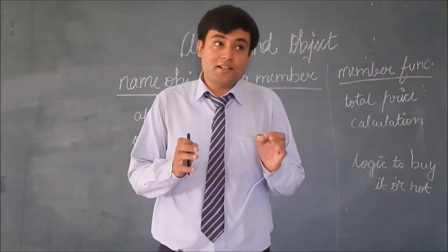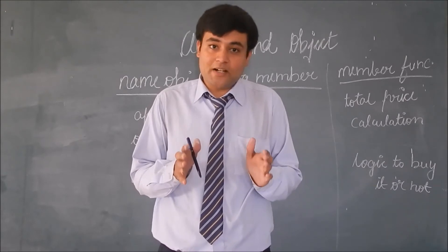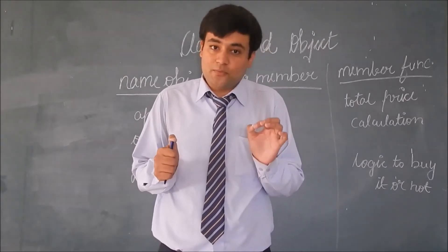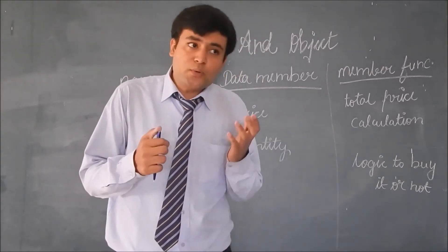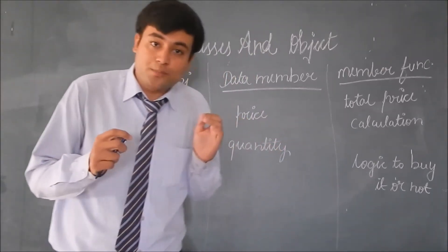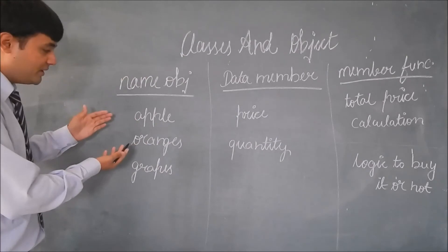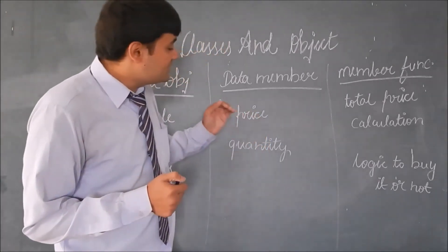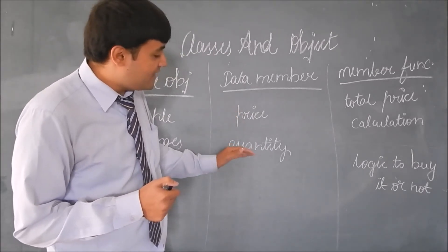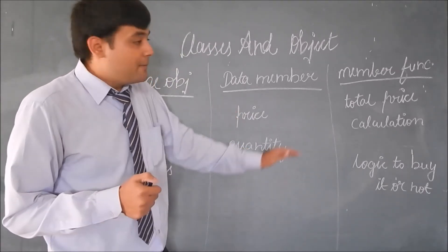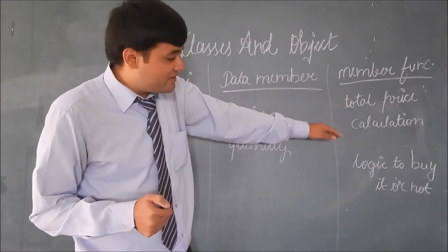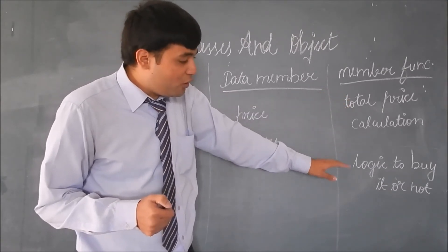To understand this concept in a better method, let's take a real world example. You are in a market to buy some fruits. What would constitute as an object? The object would be like the fruit varieties: apple, oranges and grapes. Data members will constitute prices, quantity and qualitative analysis. Member functions will constitute the total price calculation and the logic to buy it or not.